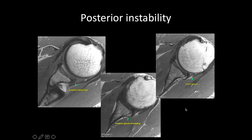Sometimes the history is not that of a dislocation — it can just be pain and discomfort. In such cases we may see a posterior labral tear with the anterior labrum appearing normal. Additionally there may be bony osseous remodeling of the anterior glenoid and laxity of the capsule. Putting these findings together, we can suggest posterior instability, for which clinical correlation with instability testing would need to be done.